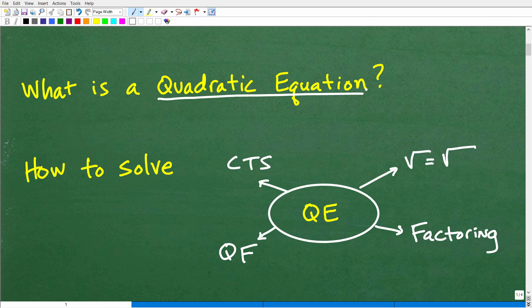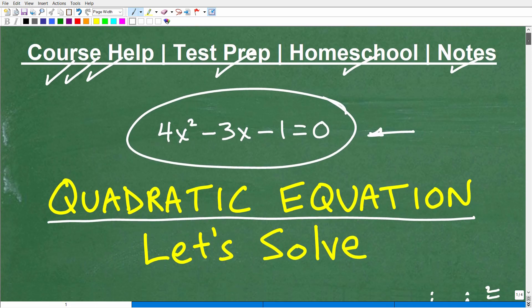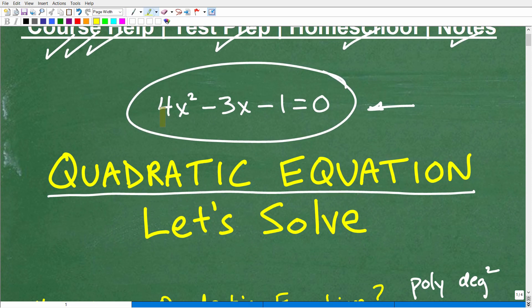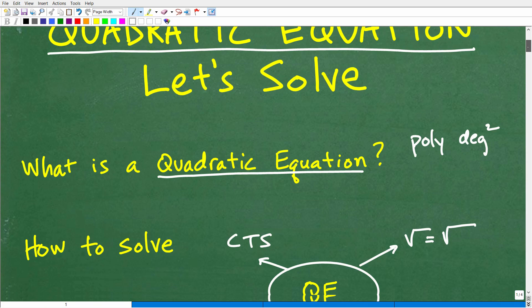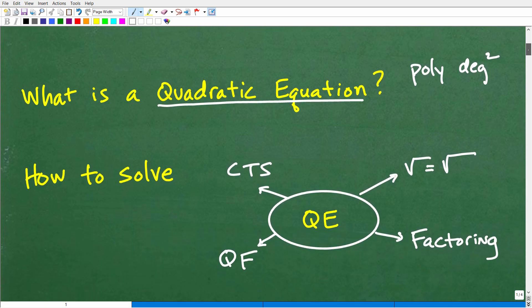First of all, what is a quadratic equation? Put your answer into the comment section if you think you know what it is. But effectively, a quadratic equation is a polynomial of degree 2. Let's go back here to our problem - this thing right here is a polynomial, and its degree, its highest power, is 2.